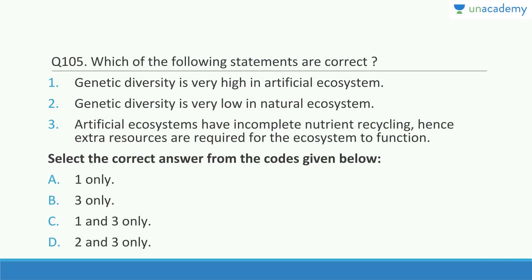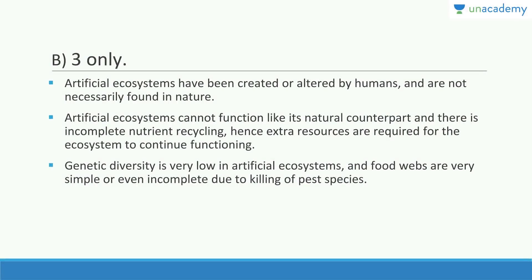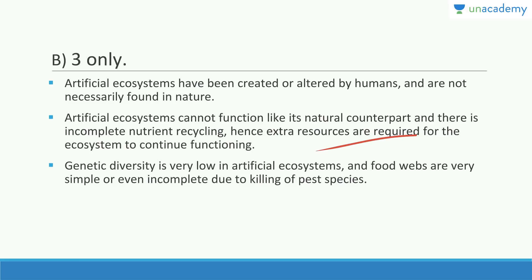Genetic diversity is very low in artificial ecosystems and very high in natural ecosystems, so statements one and two are wrong — the only possible answer is three only. Artificial ecosystems have incomplete nutrient recycling, hence extra resources are required. They have been created or altered by humans, cannot function like natural counterparts, have simple or incomplete food webs due to killing of pest species.